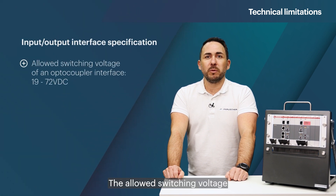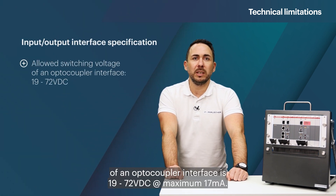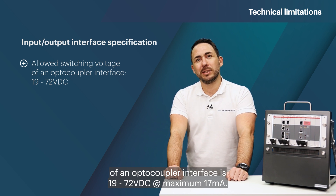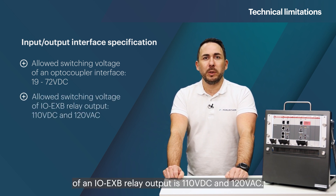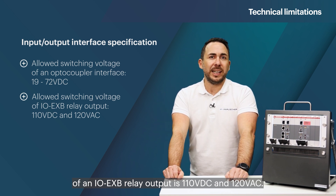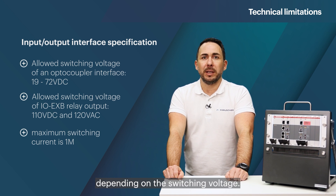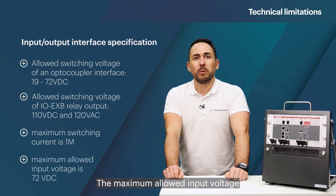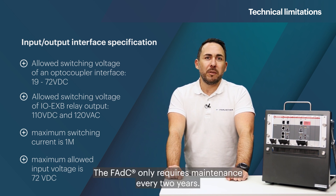The allowed switching voltage of an optocoupler interface is 19 to 72 Volt DC at maximum 70 milliamps. The allowed switching voltage of an IOXB relay output is 110 Volt DC and 120 Volt AC. The maximum switching current is 1 Amp depending on the switching voltage. The maximum allowed input voltage is 72 Volt DC. The FADC only requires maintenance every two years.